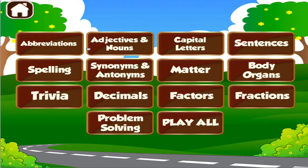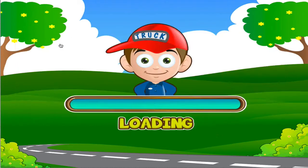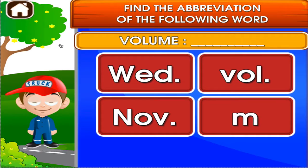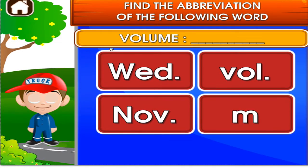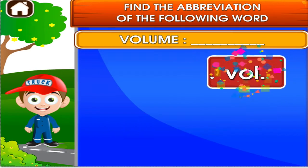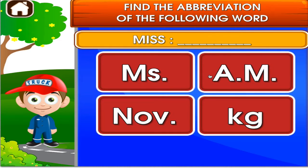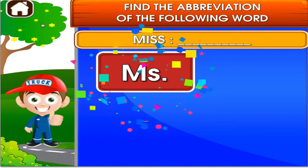Choose the activity you want to play. Abbreviation. Tap the correct answer. Superb! Tap the correct answer. Superb!